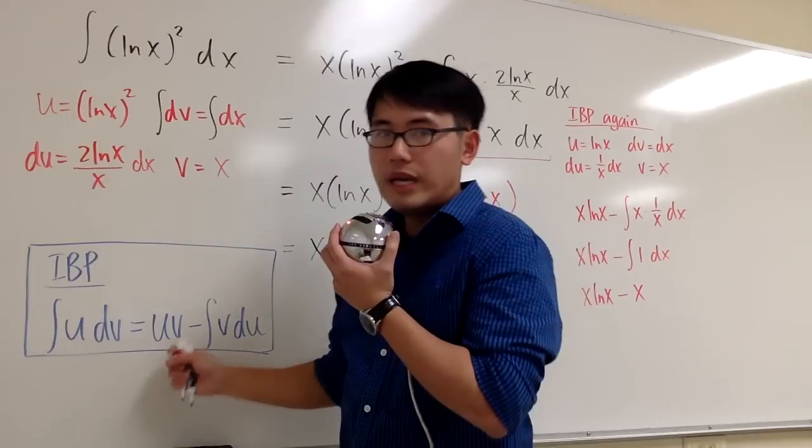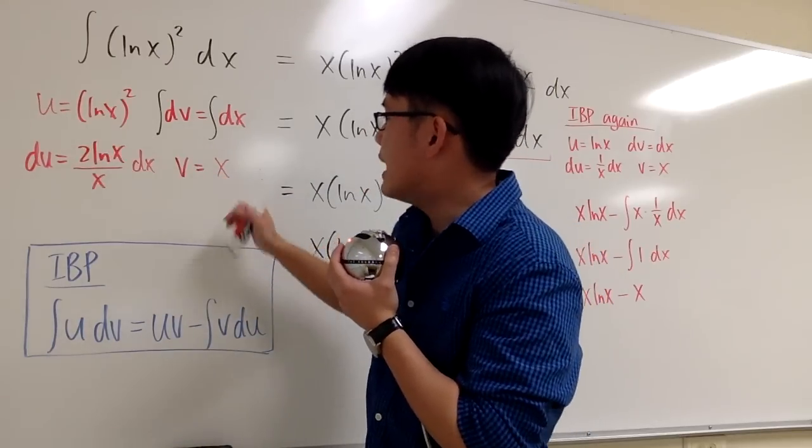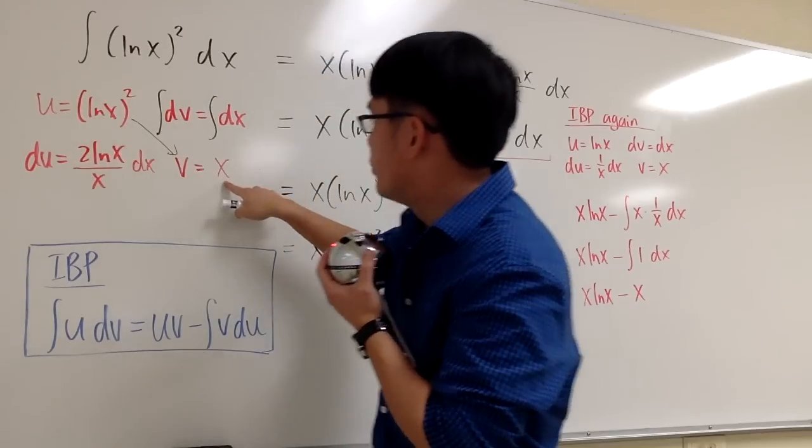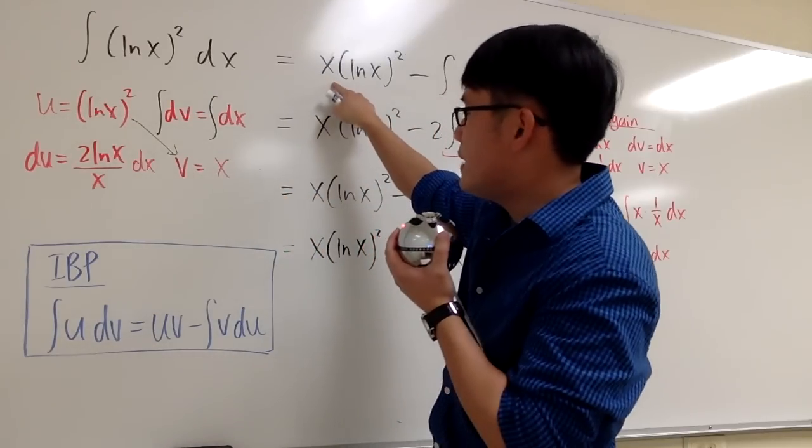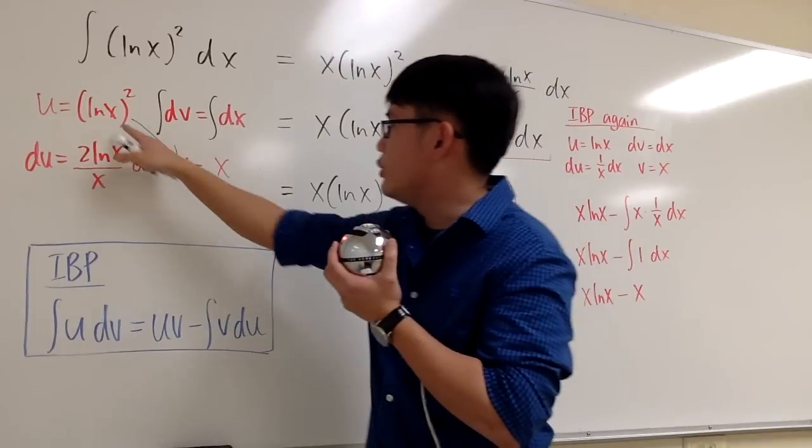So integration by parts says we have to multiply the u and v together. u is this, and v is that, so we'll multiply these two together. I'll put the x down first, so we have x times (ln x)², and that's the uv part.